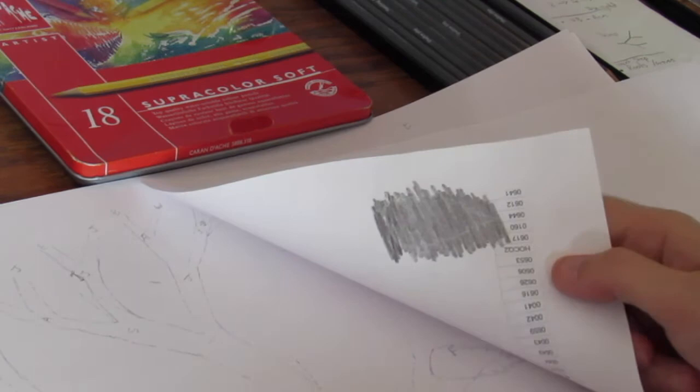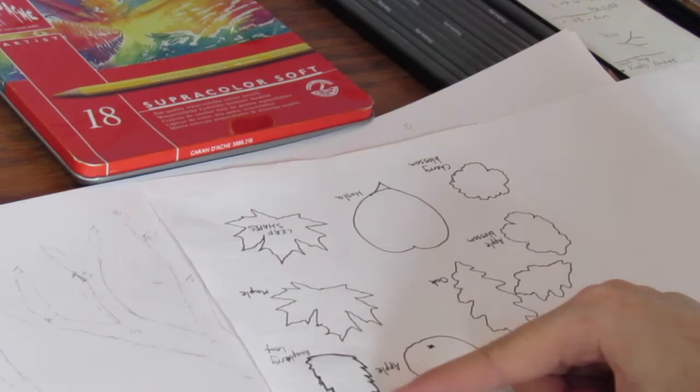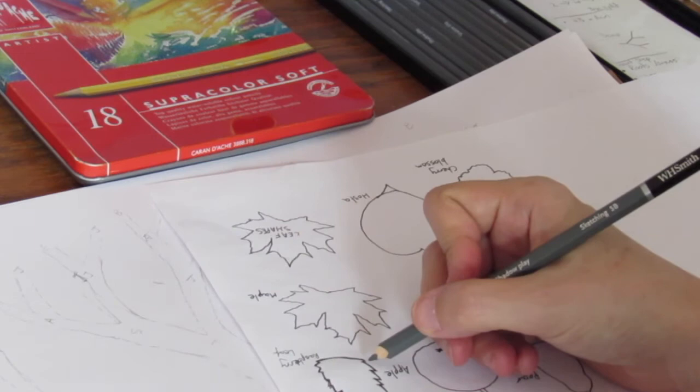is I've scribbled in a soft pencil on the back of the page on the other side of the leaf that I'm using, because when I then go over the leaf on the actual drawing itself,